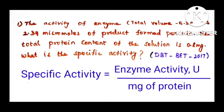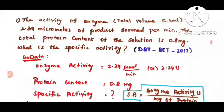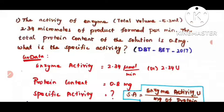Hello everyone, today we are going to learn how to calculate specific activity from enzyme activity. In this video we have two different problems on specific activity. The first problem is: the activity of an enzyme in a total volume of 5.3 ml is 2.34 micromoles of product formed per minute. The total protein content of the solution is 0.8 mg. What is the specific activity?